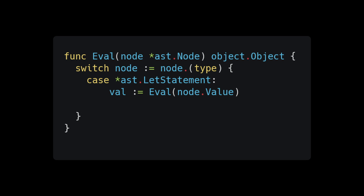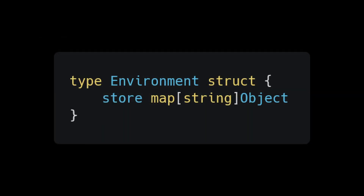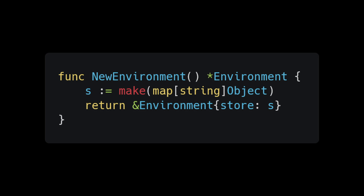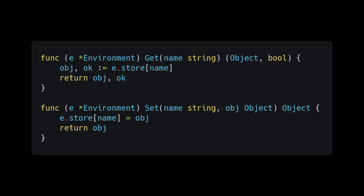An environment is honestly just a wrapper around a map. Create an environment struct inside our object package with a variable called store that maps a string to an object. Create a constructor to initialize the store, then create two helper methods — get and set — to get and set values in the environment.